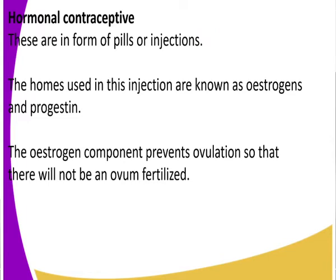One type of artificial contraception is hormonal contraceptives, which come in the form of pills or injections. When we talk of hormonal contraceptives, we have two hormones: oestrogen and progesterone. These are the hormones responsible for contraception. When you induce a hormonal pill or injection, it works to disrupt the functioning of those hormones.